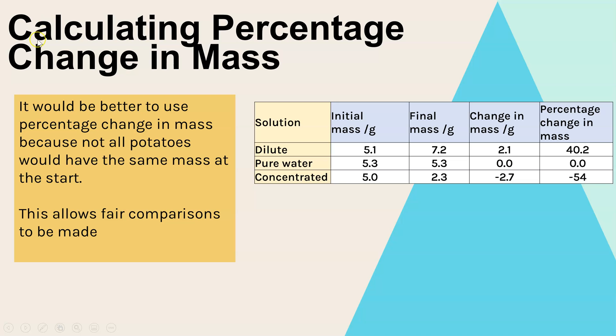Now, it would actually be better to present that as the percentage change in mass. And the reason for that is not all of the potatoes that we were measuring would have been exactly the same mass to begin with. So to make sure it's a fair comparison, we actually need to calculate the percentage change in mass. So this table shows you all the data that was collected. The initial mass of the potato before it went in the solution. The final mass of each potato cube after it had been in the solution. Then we've worked out the difference of what the change in mass was and whether it was an increase or negative indicates a decrease.